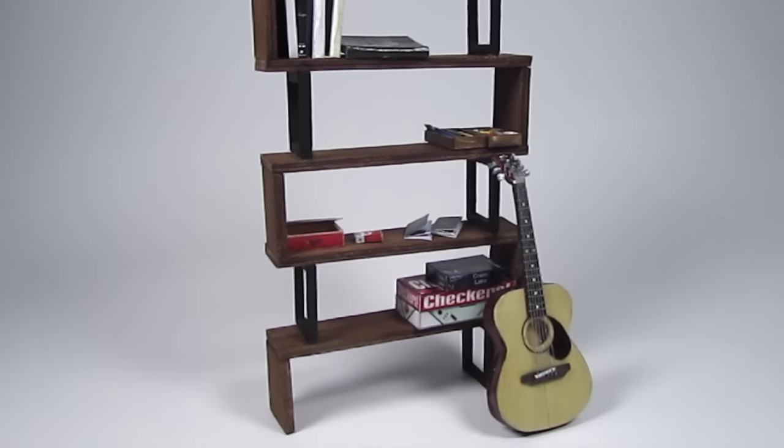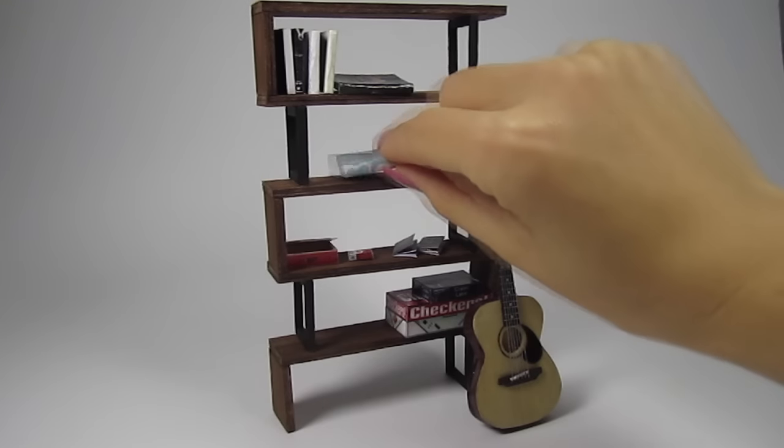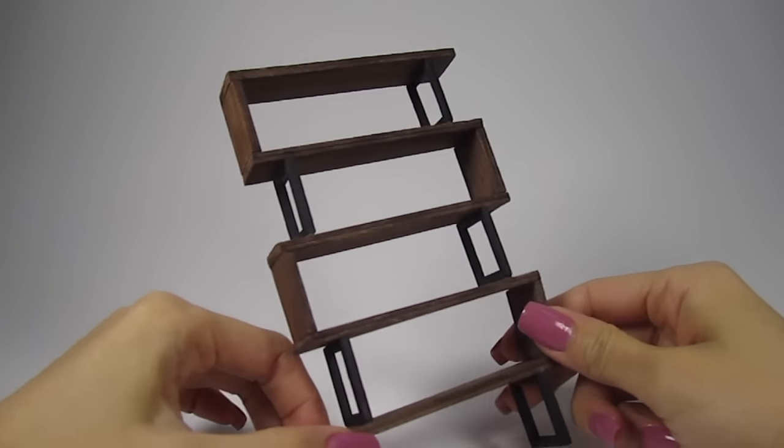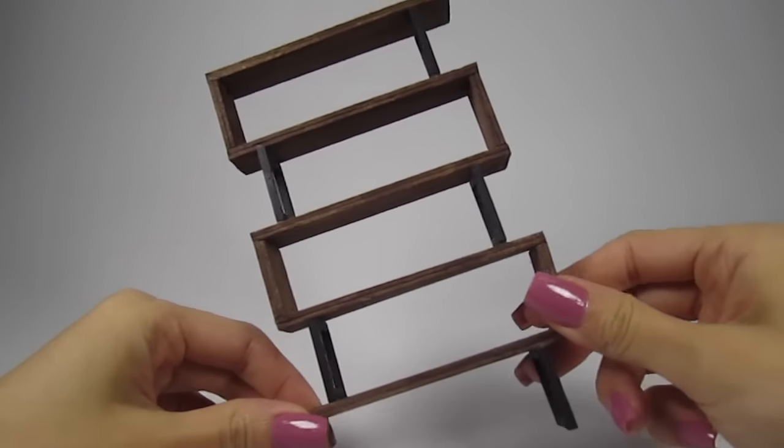Hi guys, it's Cath and today I'm going to show you how to make this miniature bookshelf. It has an industrial look so this is perfect for all modern dollhouses. This is such an easy project and only requires popsicle sticks and matchsticks. Let's get started.